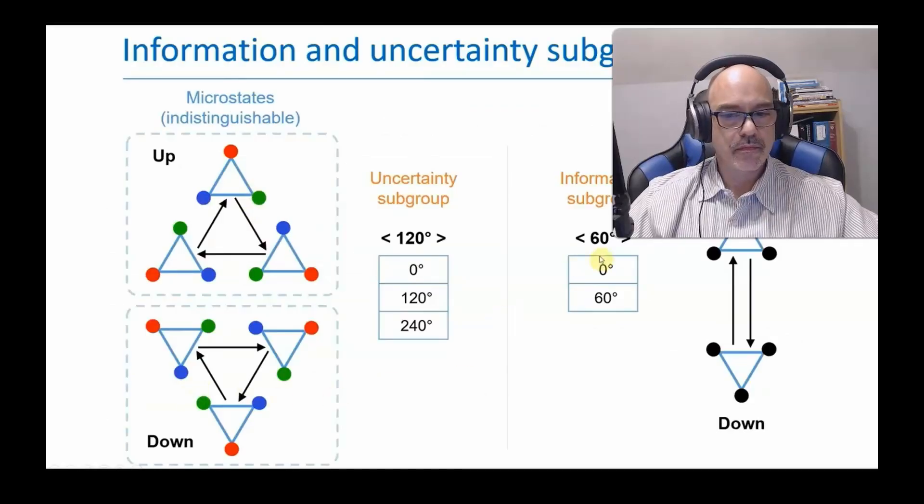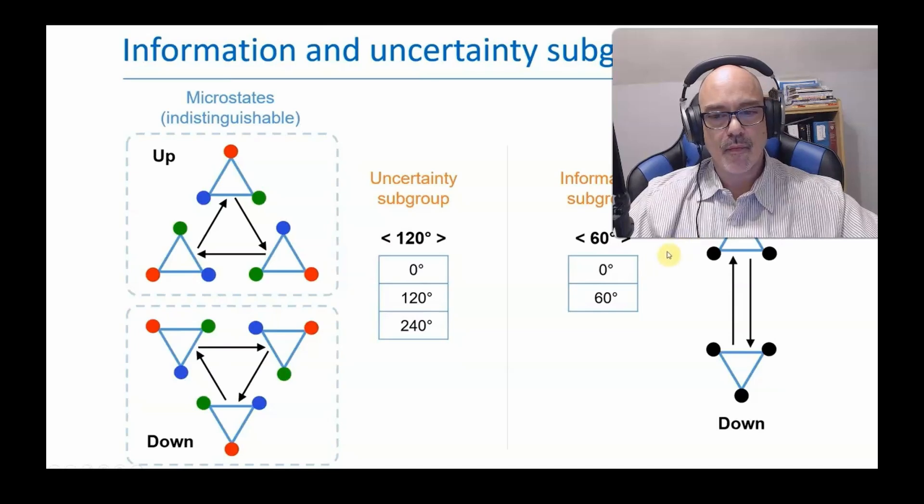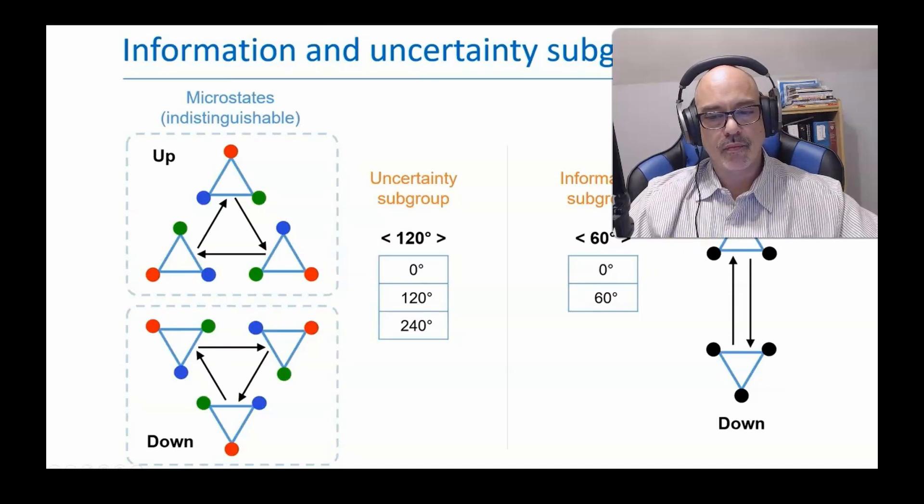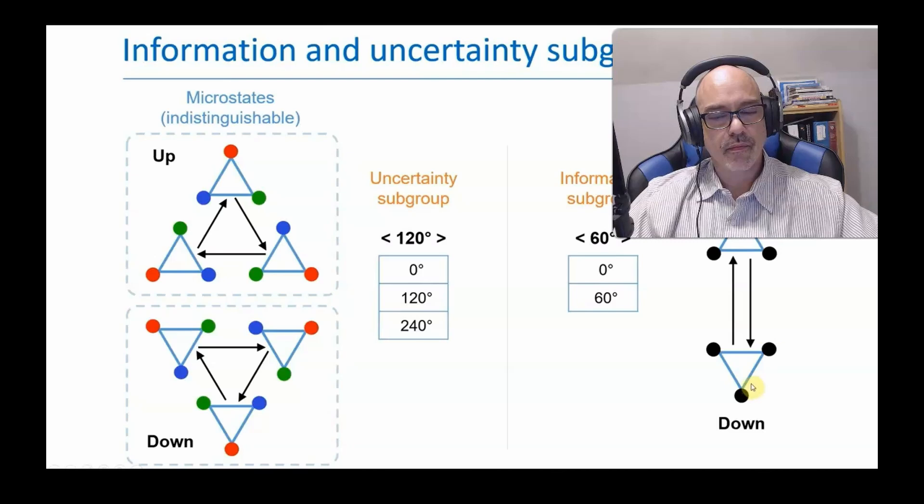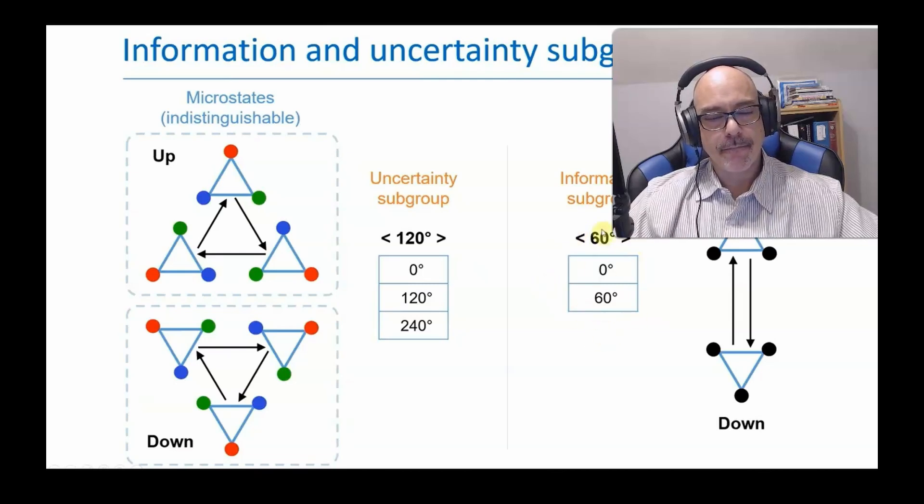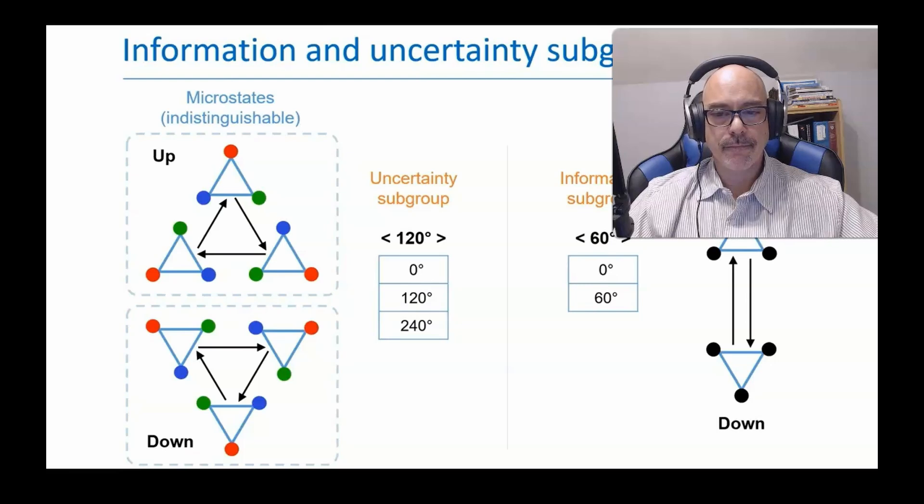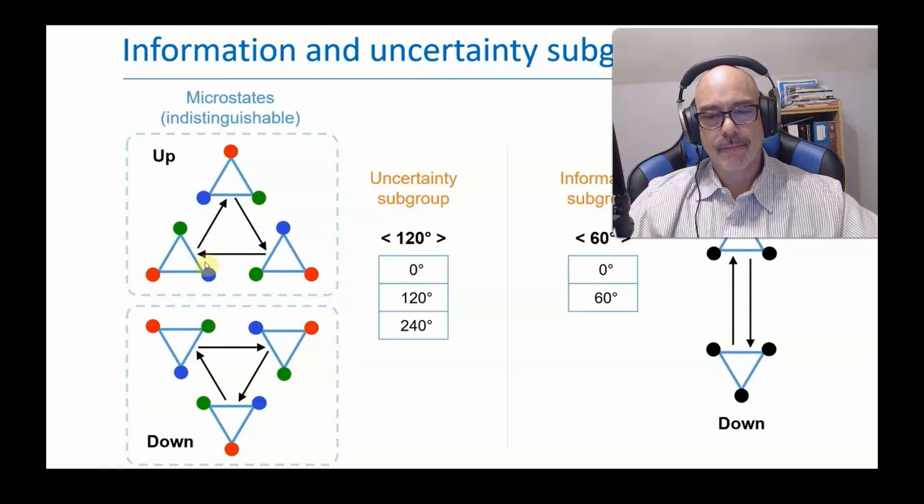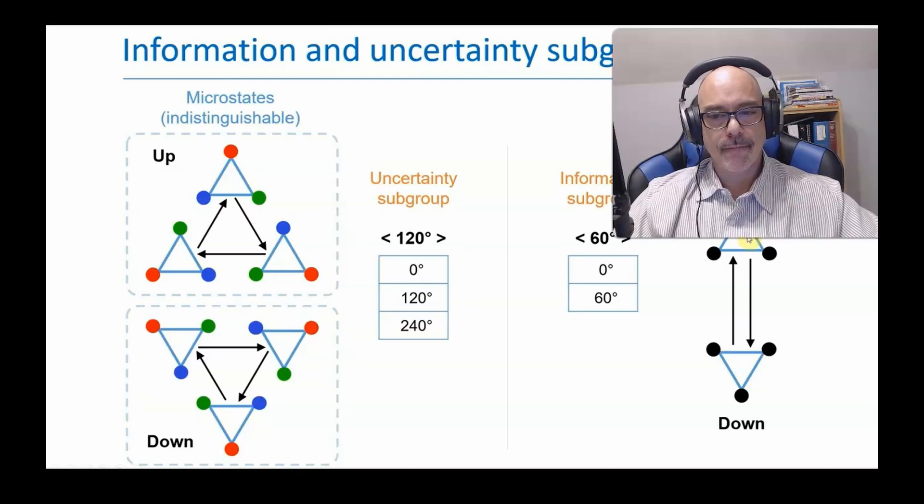What about a 60-degree rotation? It would turn any vertex up state into a vertex down state, and vice versa. In other words, it also generates a group, namely group 60. This one with two elements. This is called the information subgroup. It describes transformations that are not occurring. The object is remaining in stasis at one macro state, and thus it is not undergoing transformations to a different macro state.